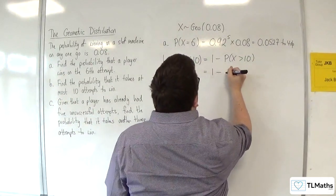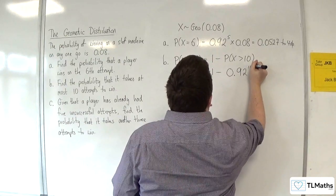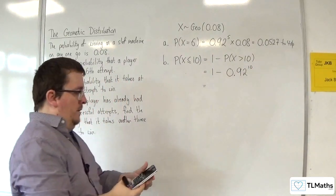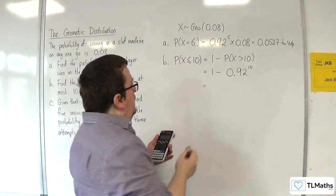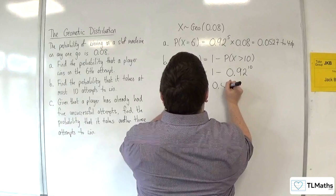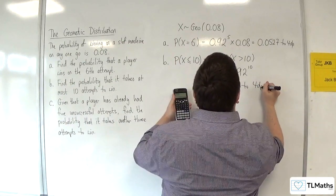So, that would be 1 take away 0.92 to the power of 10. So, 1 take away 0.92 to the power of 10, and we get 0.5656 to four decimal places.